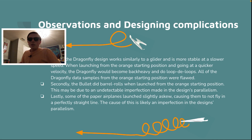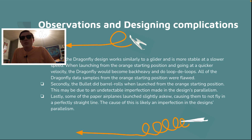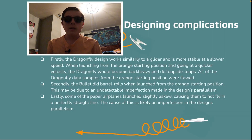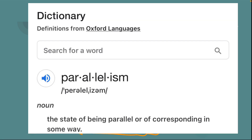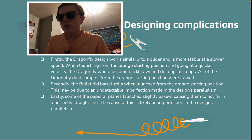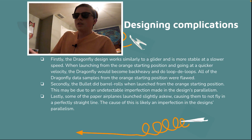Observations and design complications. The dragonfly design works similarly to a glider and is more stable at slower speeds, which means when it was pulled back further — increasing its velocity — it began to do loop-de-loops. The bullet did barrel rolls when launched from the orange starting position, which may be due to an undetectable imperfection in symmetry. Some of the paper airplane designs launched slightly askew, causing them to not fly in a perfectly straight line, which is also likely the cause of the loop-de-loops.